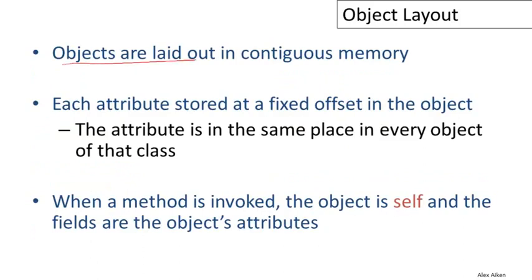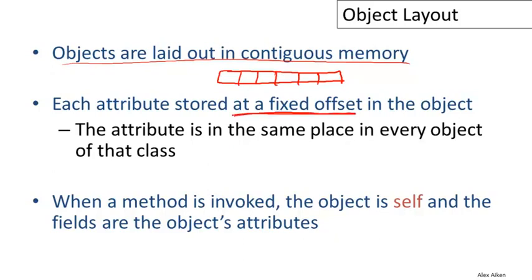The first principle is that objects are laid out in contiguous memory. An object is just a block of memory with no gaps, and all the data for the object is stored in the words of that block. Each attribute is stored at a fixed offset in the object. For example, attribute A may live in the fourth position of the object, and no matter what kind of object it is — whether it's an A, B, or C object — attribute A will always live at that position, so any method that refers to A can find the A attribute.